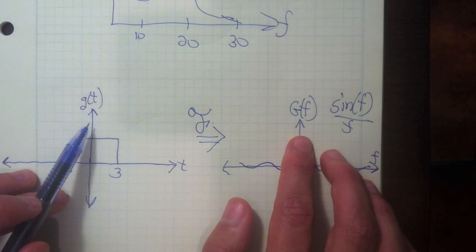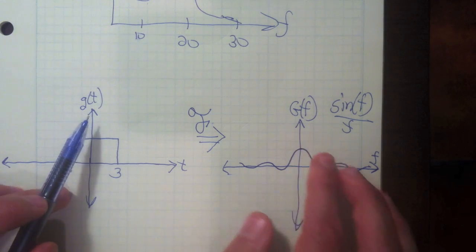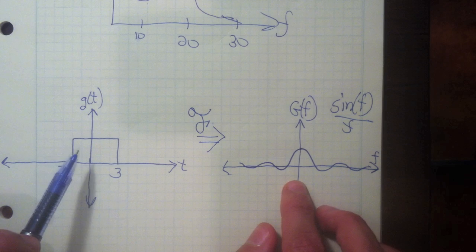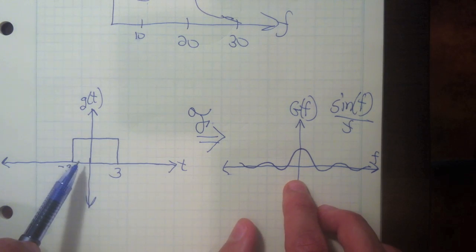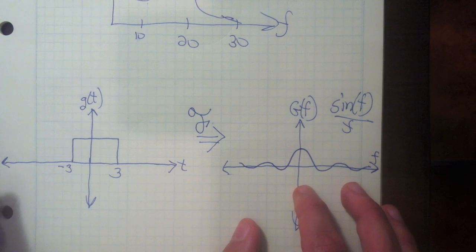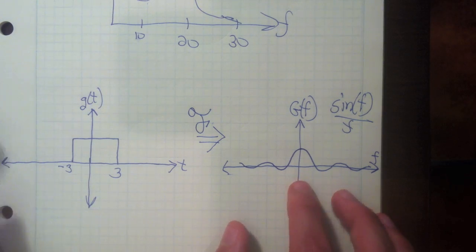So G of T and G of F are known as a Fourier transform pair. Now, there are different representations of the exact same thing. If you have this information, you can figure out what the function is in time. And if you have the function in time, you can figure out what the Fourier transform is or the spectrum, G of F.